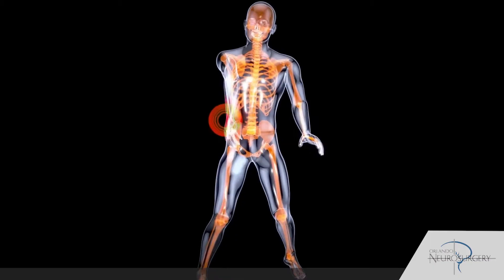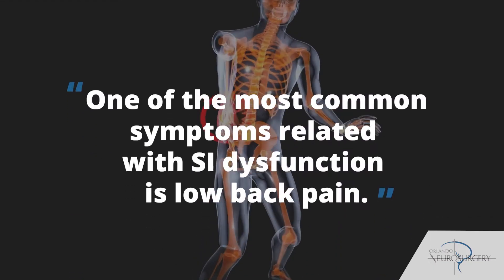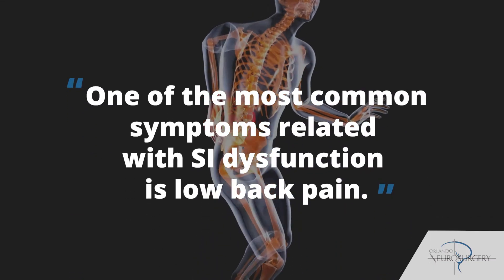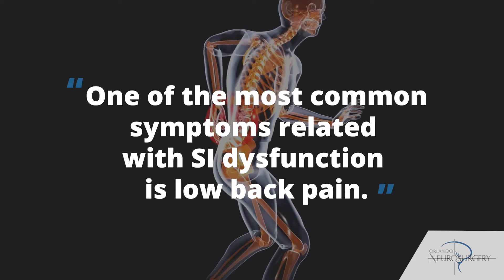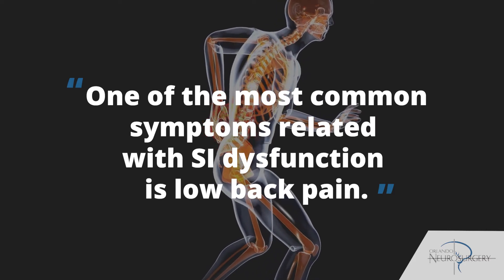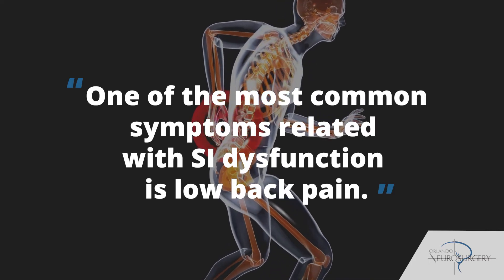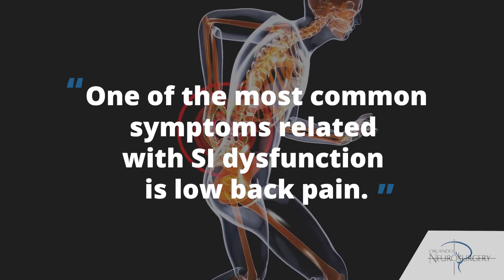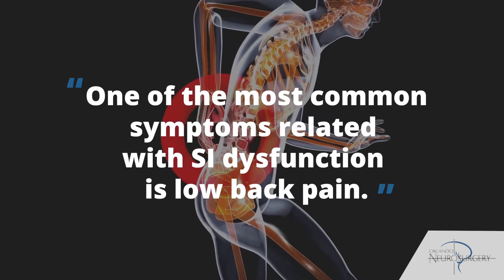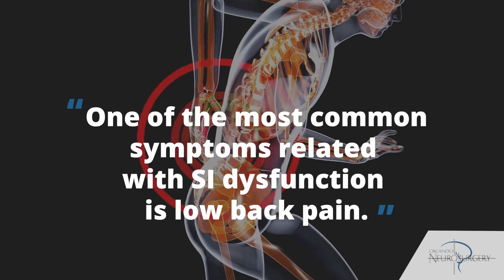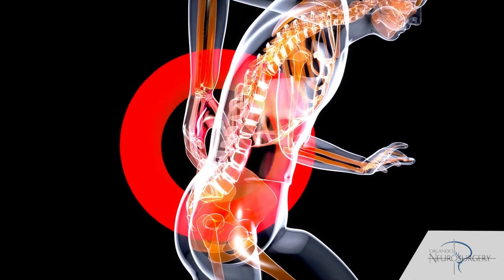One of the most common symptoms related to SI dysfunction is low back pain. Usually it's offset to one side or the other, or it can be both. Sometimes the pain can mimic radiculopathy or sciatica-like pain and go down the back of the leg.